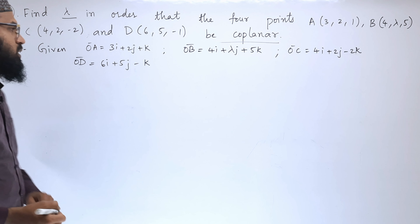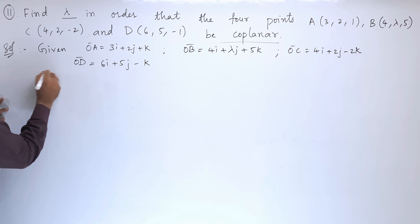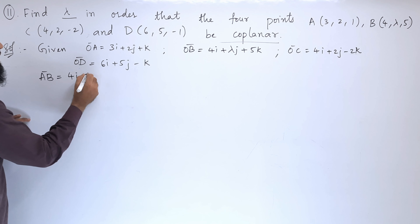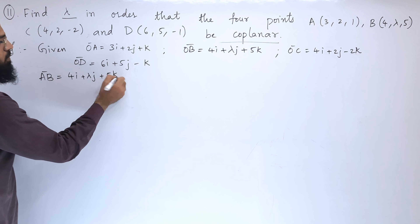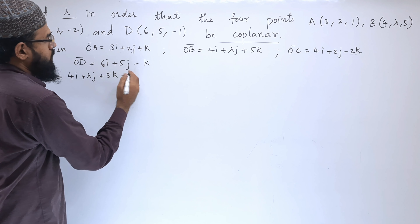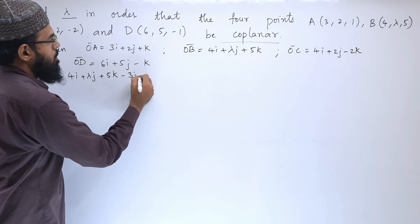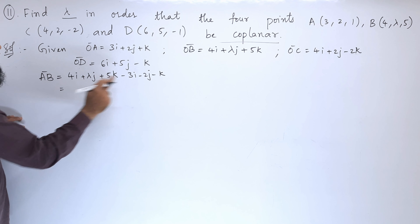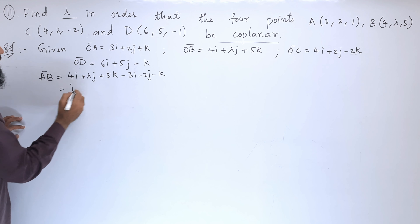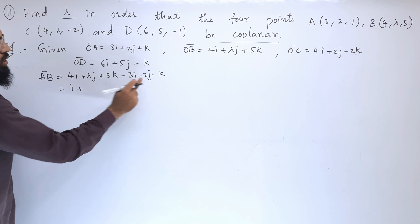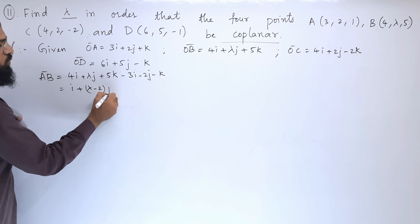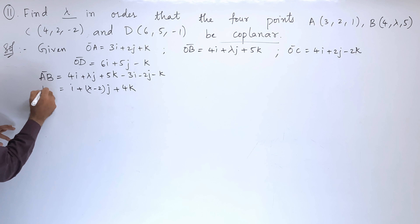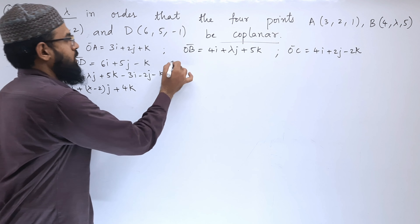These are the position vectors. Next, we need to find AB. So AB = OB - OA = (4i + λj + 5k) - (3i + 2j + k), so 4i - 3i = i, λj - 2j = (λ-2)j, and 5k - k = 4k. So AB = i + (λ-2)j + 4k.